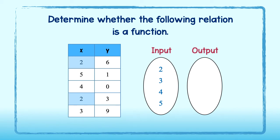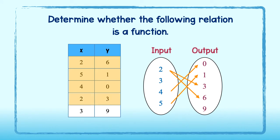The outputs in order are 0, 1, 3, 6, and 9. Now let's draw an arrow from each input to the output it is paired with: 2 pairs with 6, 5 pairs with 1, 4 with 0, 2 pairs with 3, and 3 pairs with 9. We see that there are 2 arrows coming from the number 2. This input value matches with more than one output value, and so therefore it is NOT a function.